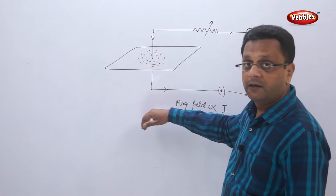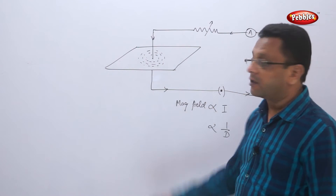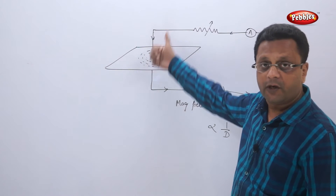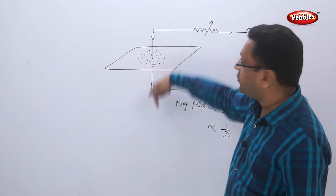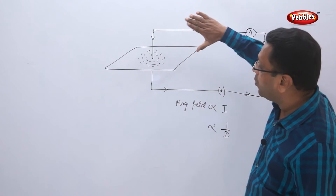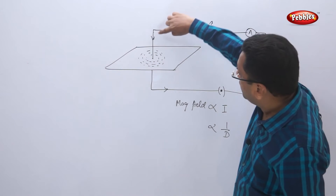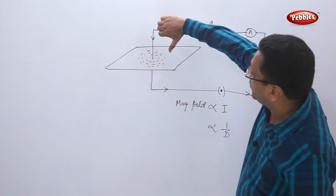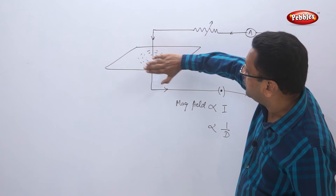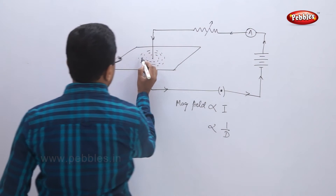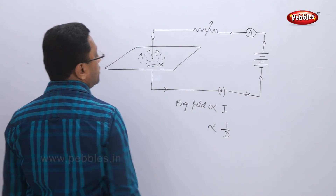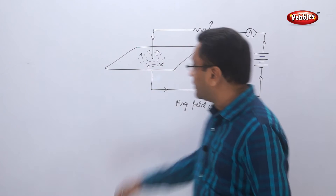I am holding this current-carrying conductor in my right hand. My thumb should show the direction of flow of current — since current is flowing in this direction, I have to hold the conductor so that my thumb points towards the flow of current. Now can you see how my fingers are curling?